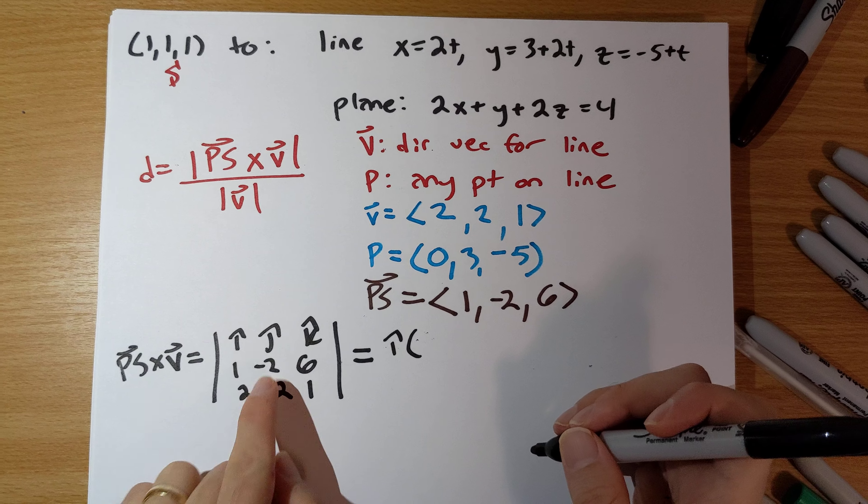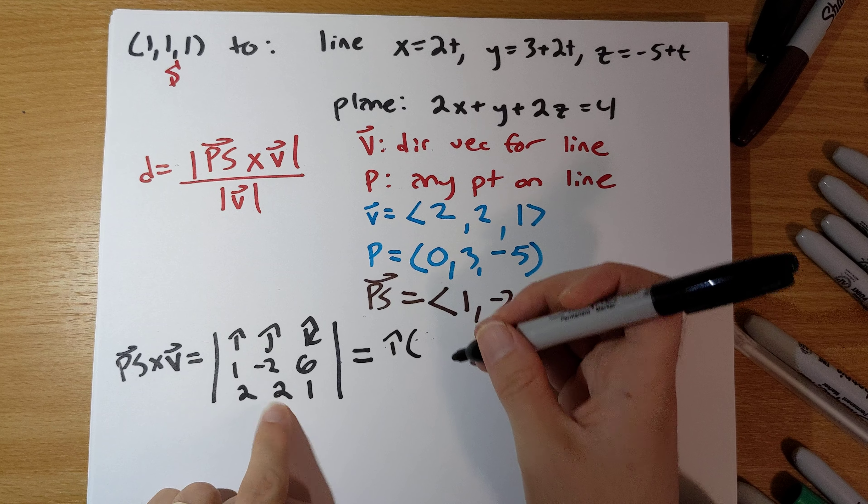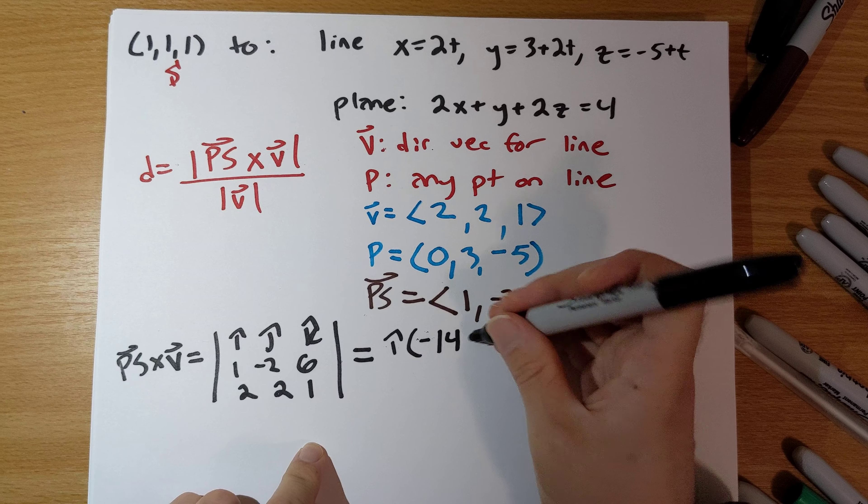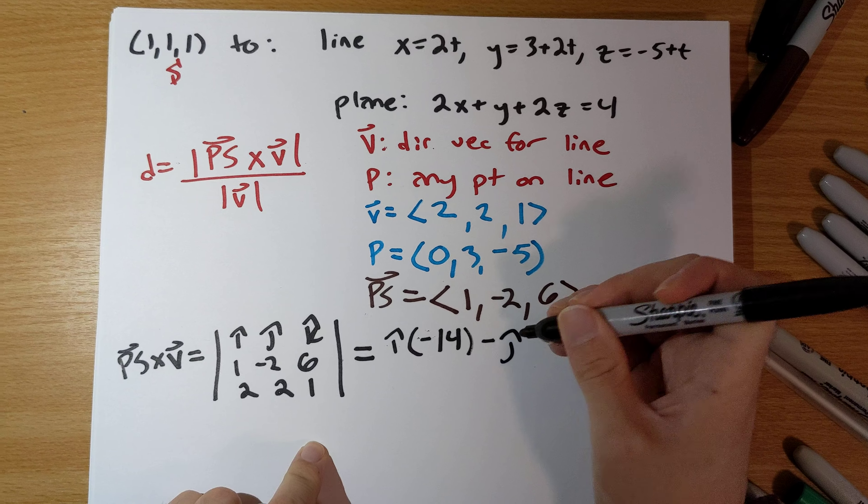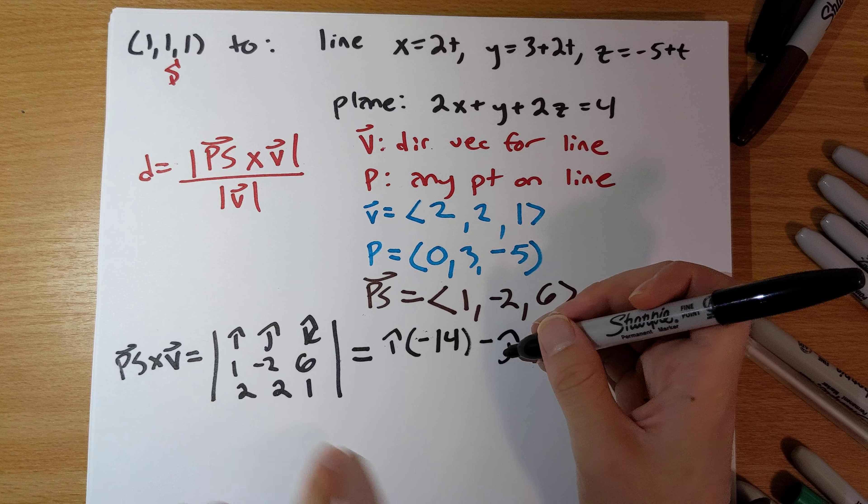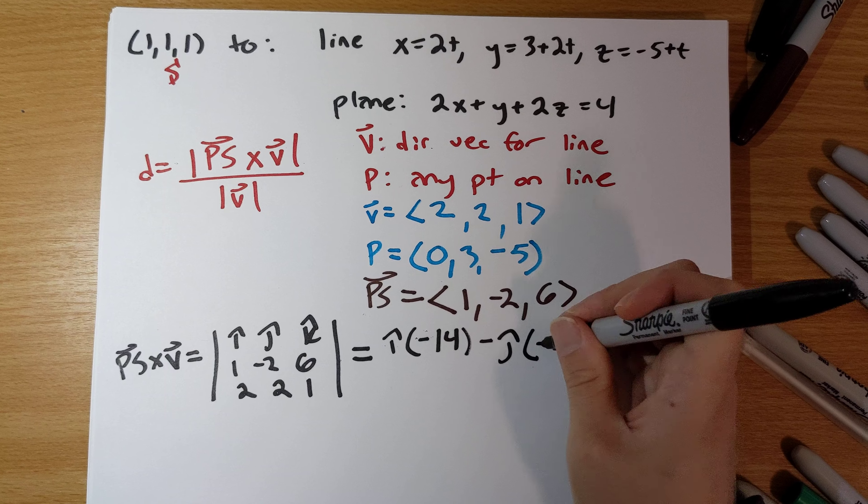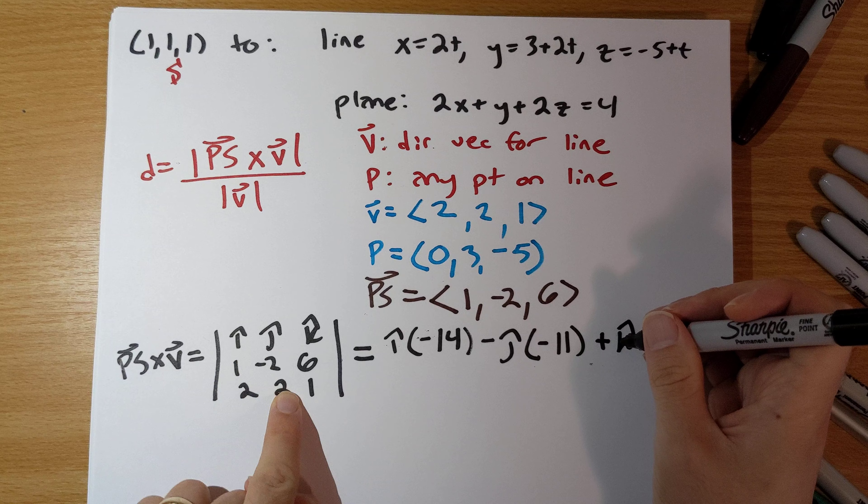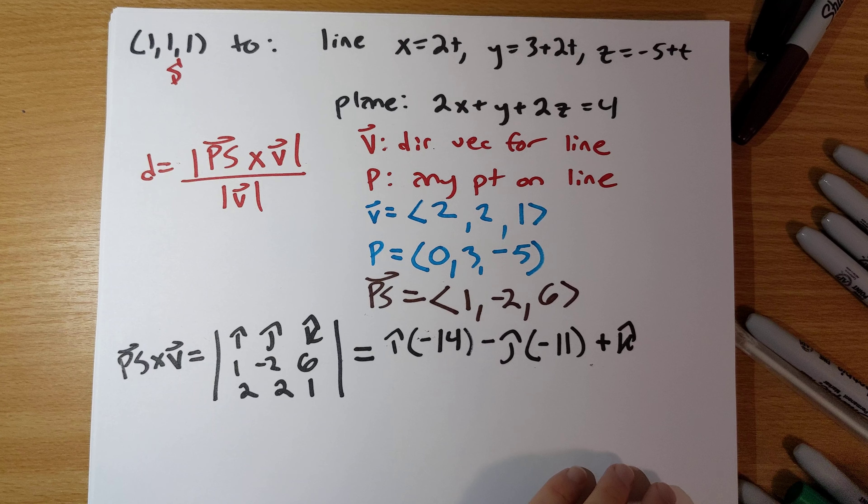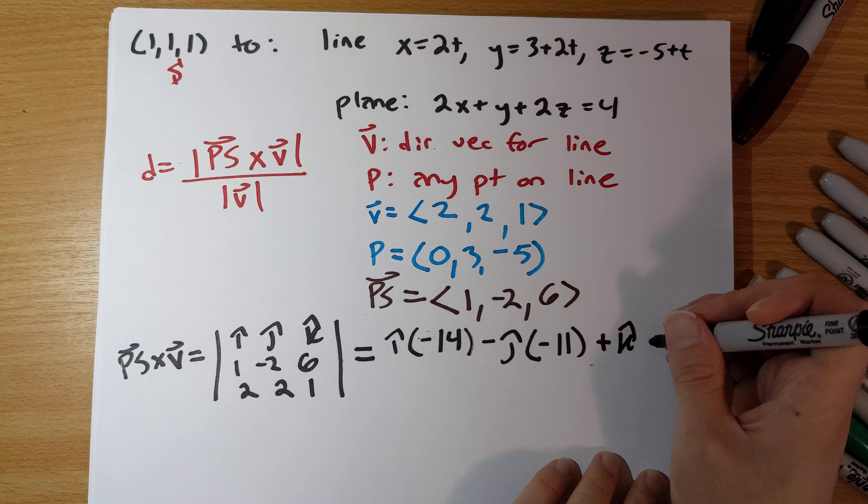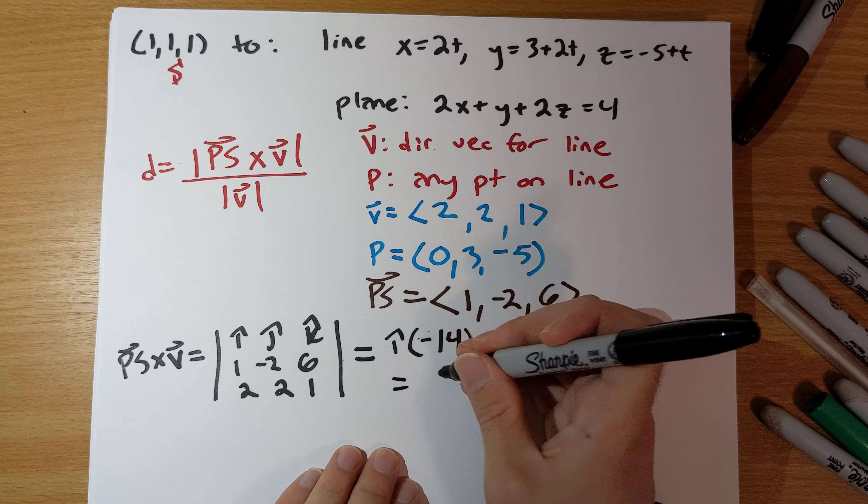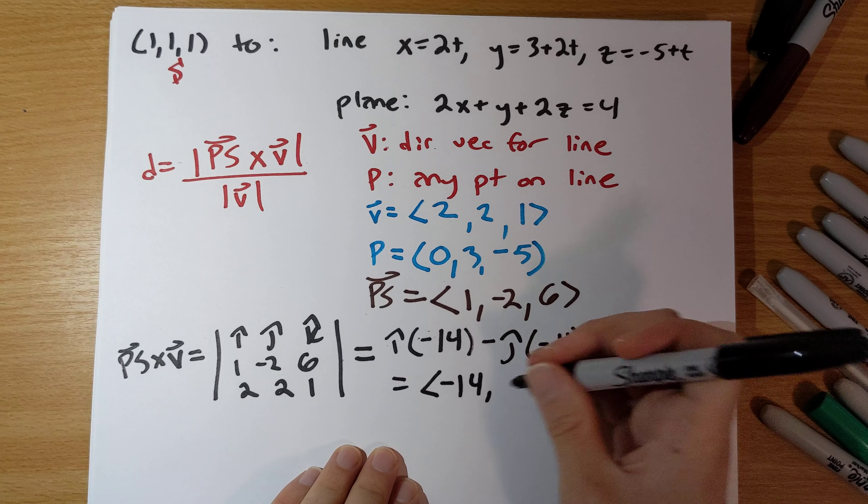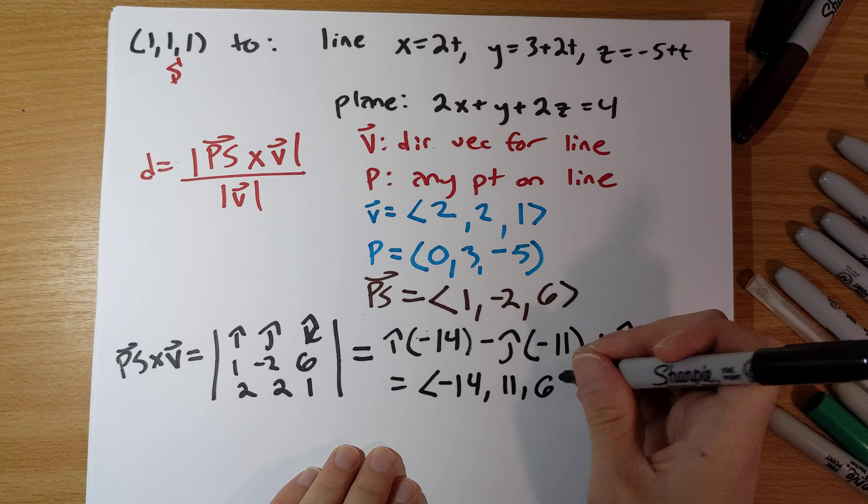So, we end up with i hat times minus 2 minus 12 is minus 14, minus j hat times 1 minus 12 is minus 11, plus k hat times 2 plus 4 is going to be 6. So, this is negative 14, 11, and 6.